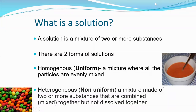So what is a solution? As we discussed yesterday, a solution is a mixture of two or more substances. There are actually two forms of solutions. You have homogeneous, which is uniform — a mixture where all the particles are evenly mixed. And then you have heterogeneous, or non-uniform, which is a mixture made of two or more substances that are combined together but are not dissolved together. An example of homogeneous is a bowl of soup, and an example of heterogeneous is a bowl of Skittles.